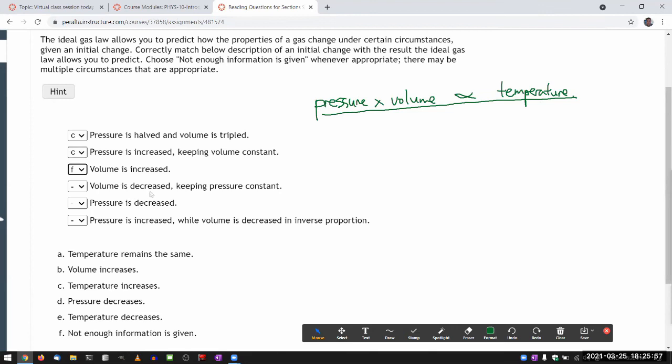Okay, so volume is decreased and keeping pressure constant. So here, okay, they said the pressure is constant, so we don't have to worry about it. So if the volume is decreasing, then temperature must be decreasing. So temperature decreases E.